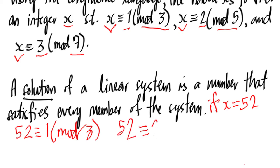Which is also true. 52 divided by 5 is 10 with a remainder of 2, so this is true.